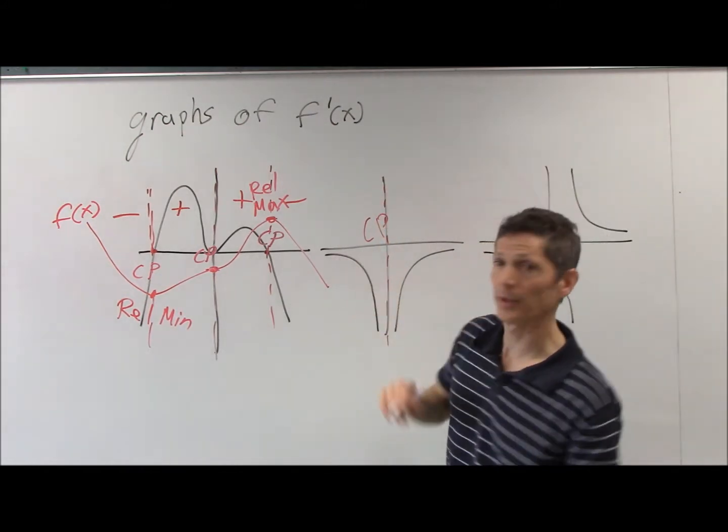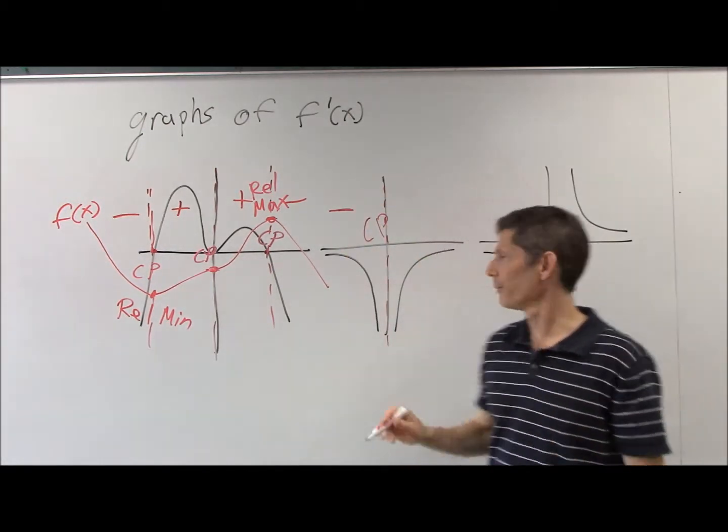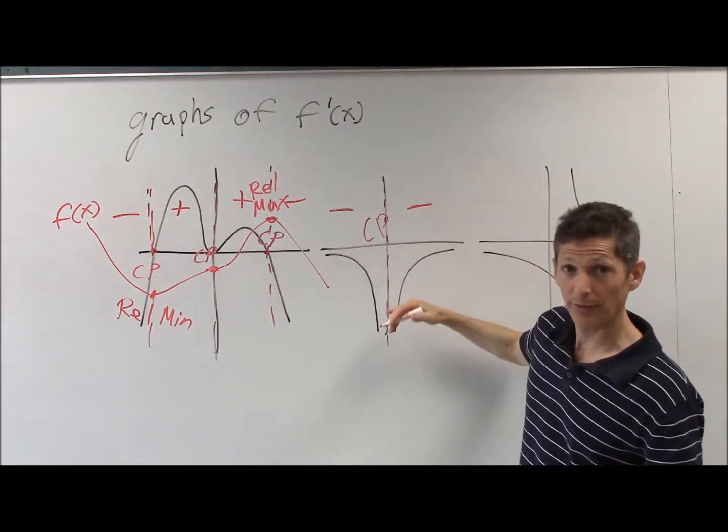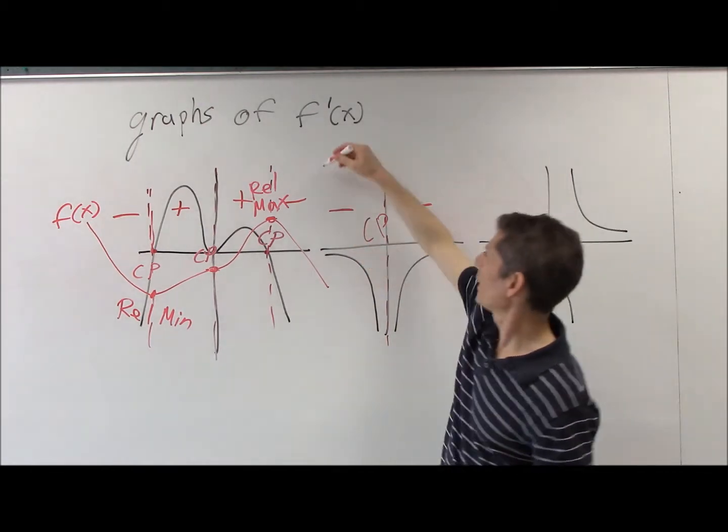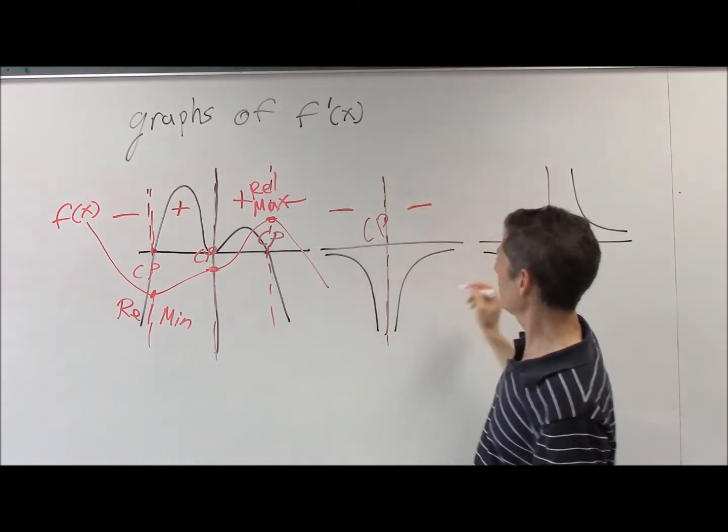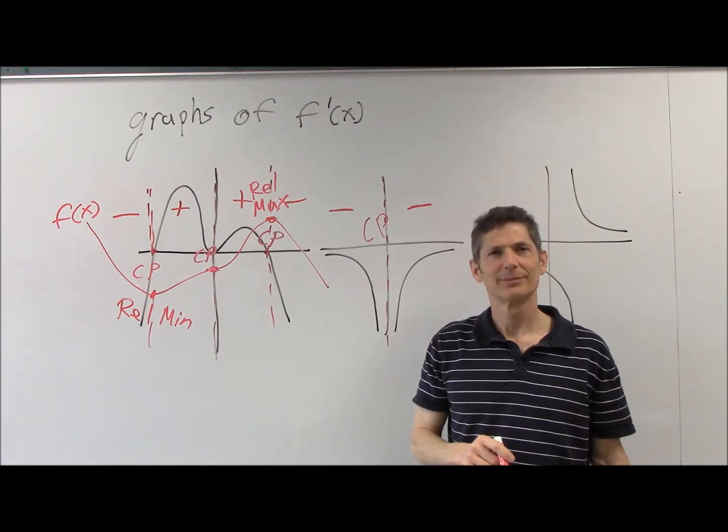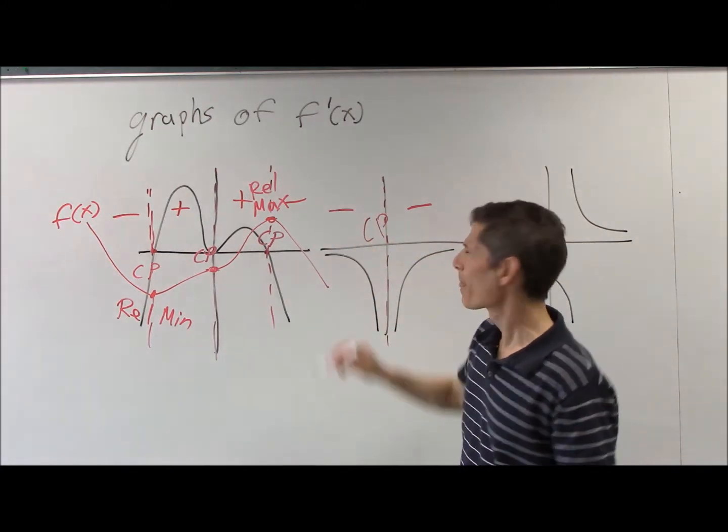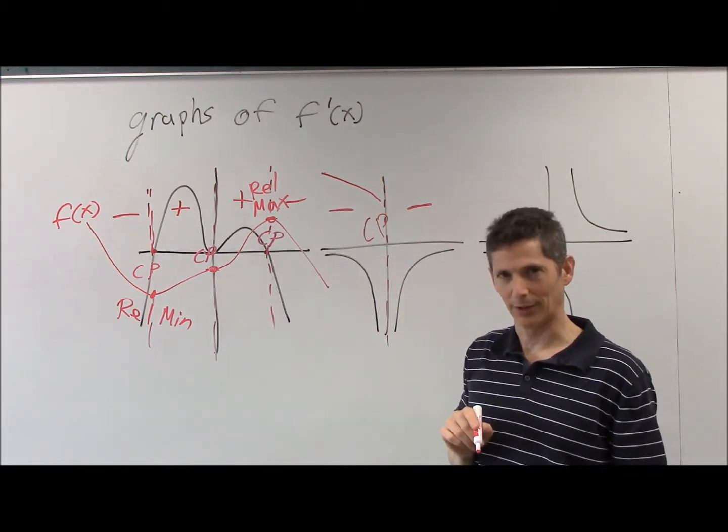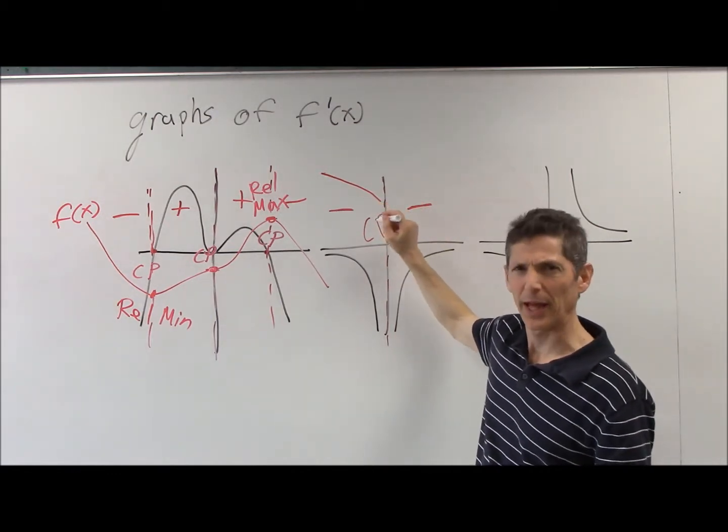So on this side, my y values are negative. Negative y values. So do I go downhill? Because you want a negative slope. We don't really know anything about concavity, so maybe we should just draw downhill. And then is it flat here? It can't be flat. It's zero. And it can't be a point, because a point would be undefined.